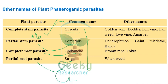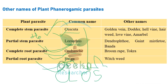A memory trick to remember the classification: use 'CLOS' - C for Cascuta (Complete stem), L for Loranthus (partial stem), O for Orobanche/Warabanki (complete root), S for Striga (partial root). Match CLOS with complete stem, partial stem, complete root, and partial root respectively.